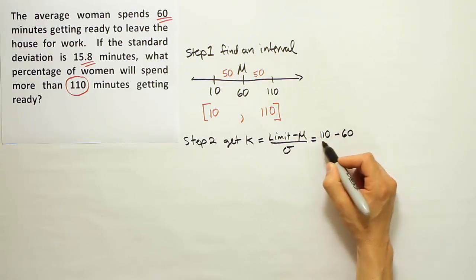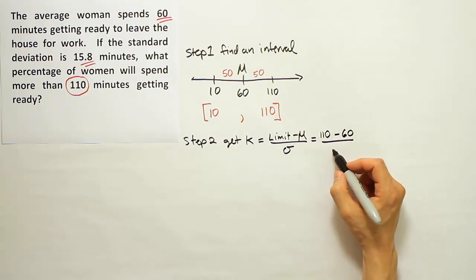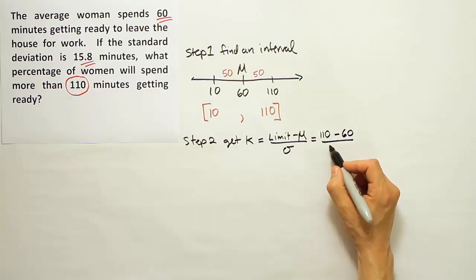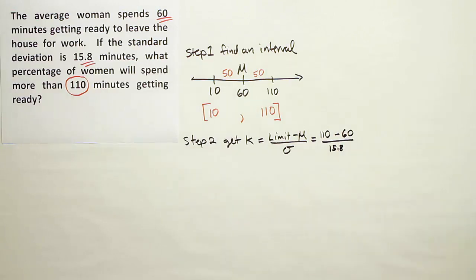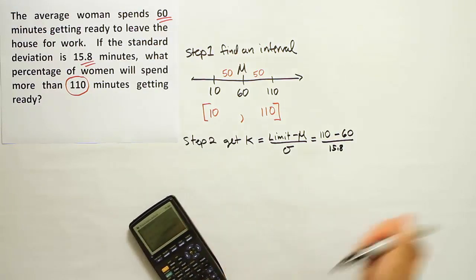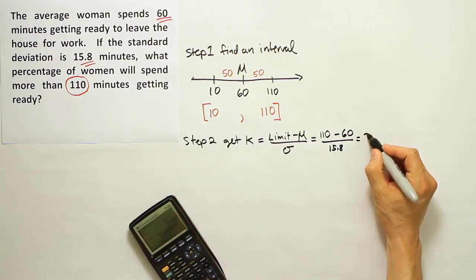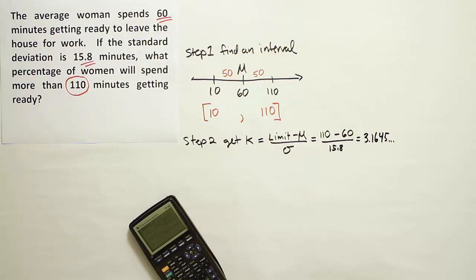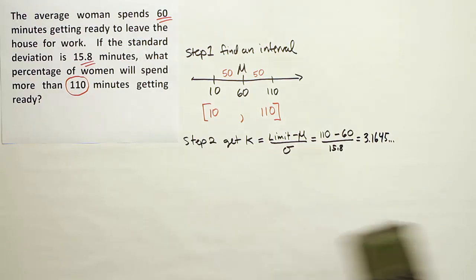Let's use 110, subtract off the mean which is 60, and divide by the standard deviation which is 15.8. That's going to work out to be 50 divided by 15.8. When we do that, we end up with 3.1645 and so on. We'll leave that off to the side now and go to the next phase of the problem.